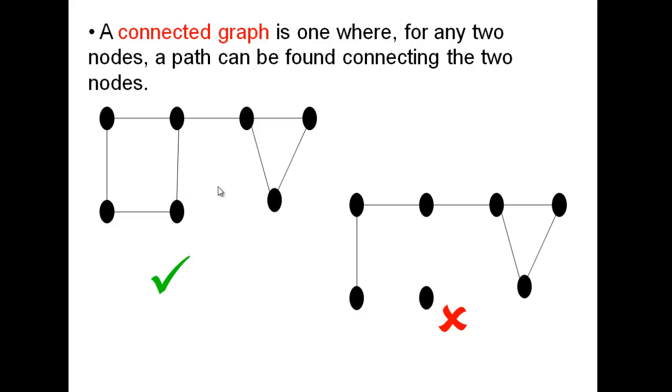This is a connected graph. For a connected graph we must be able to find a path from any node to any other node. In other words, we must be able to get there. So we must be able to get from, say, that node to that node to any of the nodes. Here, clearly, we can't do that because we can't get to this node from anywhere or from this node to any of the others. So that's not a connected graph.